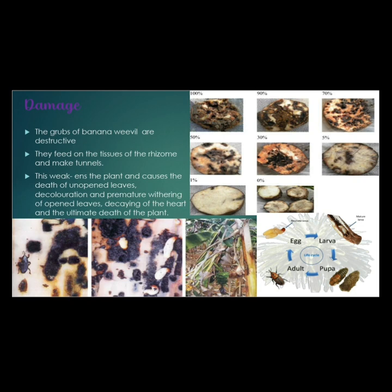The pest infestation levels range from 0%, 1%, 5%, 15%, 17%, 19%, up to 30% and 100%. When 100% pest infestation occurs, the banana plant is completely destroyed.